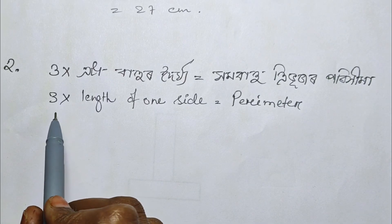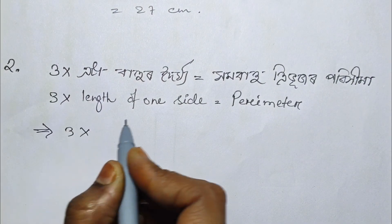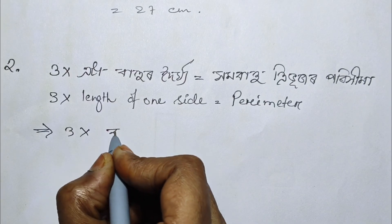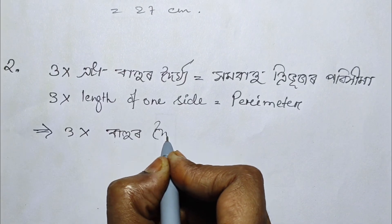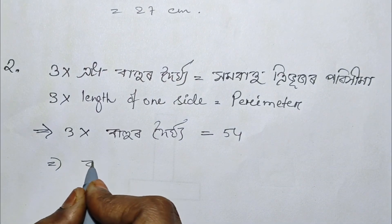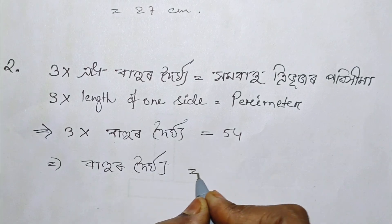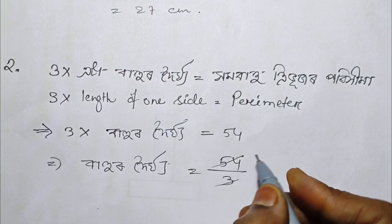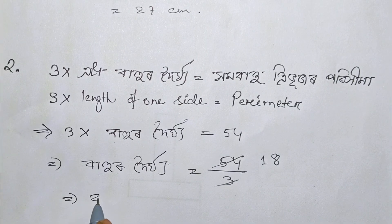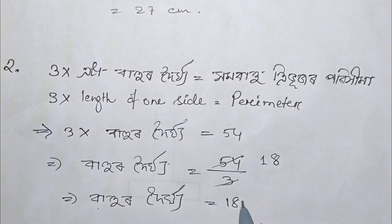So 3 into the length of one side equals the perimeter. We don't know the side length. The perimeter is 54, so the side length equals 54 divided by 3, which gives us 18 cm.